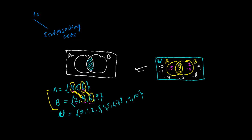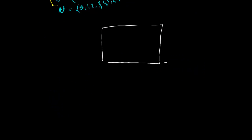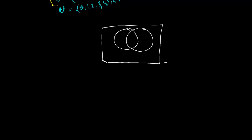This is what intersecting sets are. A and B here form an intersecting set. If there are three sets and all three have common elements, we make a figure where all three circles overlap. The center region is the common intersection of A, B, and C. We fill that first, then the regions common to just A and B, just A and C, just B and C, then the A-only, B-only, and C-only regions, and finally the remaining elements in the outer section of U. This is how we represent intersecting sets in a Venn diagram.